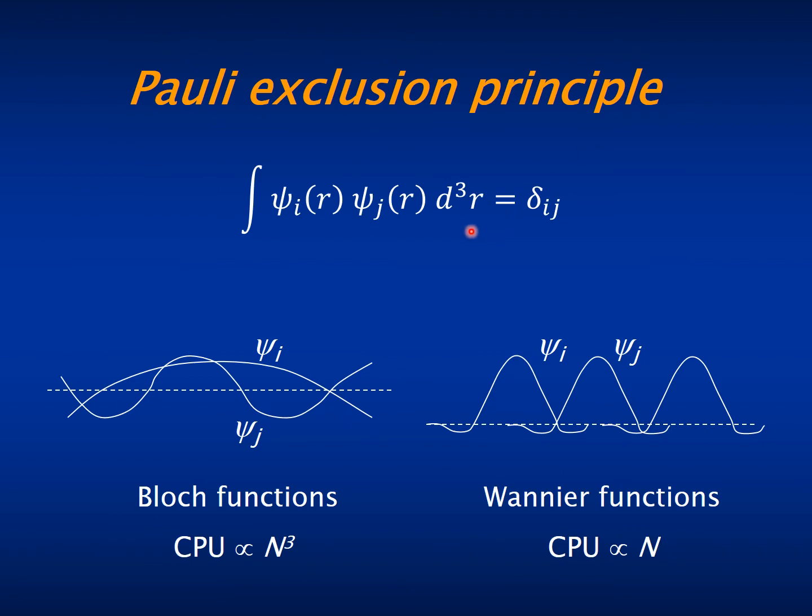It is easy to see that the Kohn-Sham method scales computationally as the cube of the number of electrons, and this is essentially due to the Pauli exclusion principle that requires that the occupied states are mutually orthogonal.